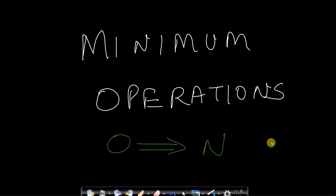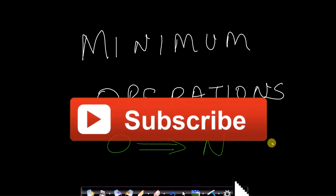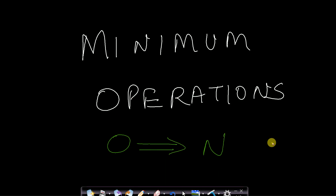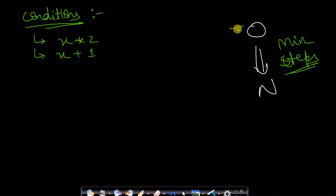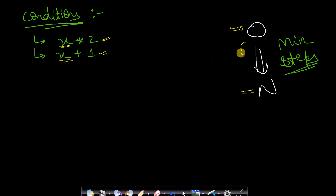Hello guys, welcome back to TakeDose. In this video we will see how to find the minimum number of operations required to convert 0 to n with some given operations under some given conditions. We have a number 0 and you input a number n — the allowed operations are: multiply x by 2, or add 1 to x. You need to do this conversion in the minimum number of steps and return that count.